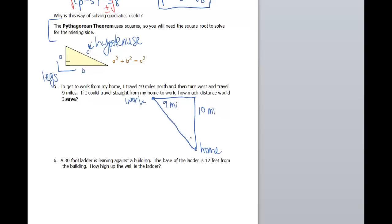That actually looks pretty good. How much distance would I save? So ignoring my kind of sad looking drawing here, hopefully you notice that this is actually a right triangle. The two pieces of information given are my legs, and I'm looking for my hypotenuse. If I could travel straight, so that would be my straight distance there.